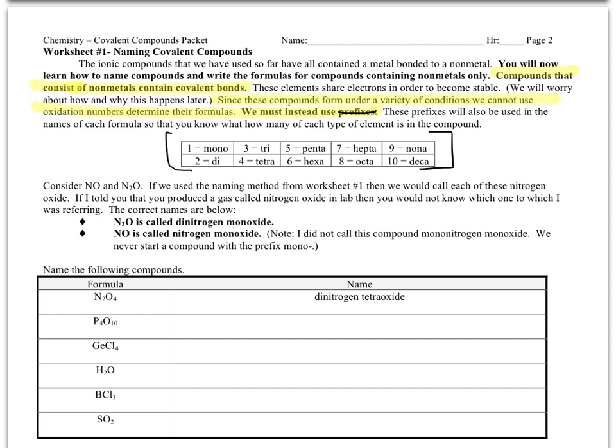The reason we have to use prefixes is this: if we think about nitrogen and oxygen bonding together, they're both nonmetals, both negatively charged. Sometimes we get one nitrogen and one oxygen combining, and sometimes under different conditions we'll get two nitrogens and one oxygen bonding together. If we use the ionic bond naming method from the previous packet, both of these would be called nitrogen oxide.